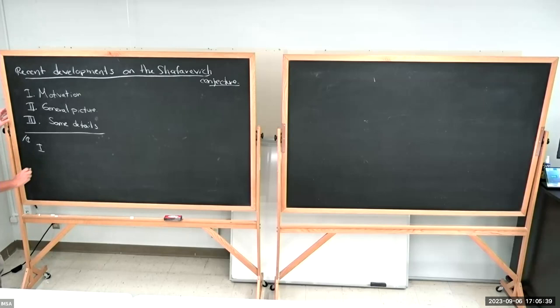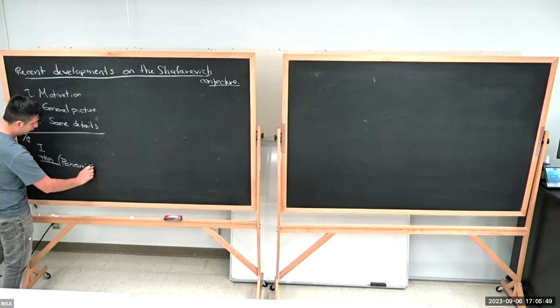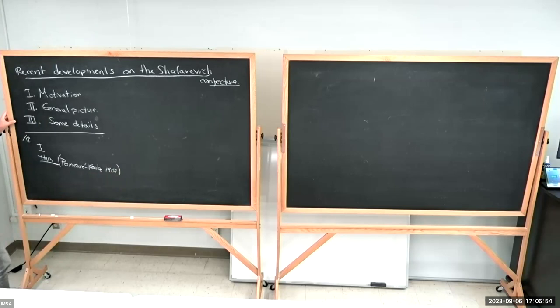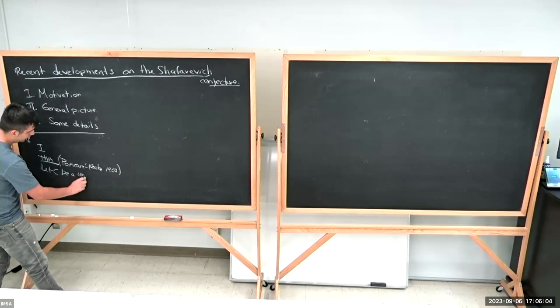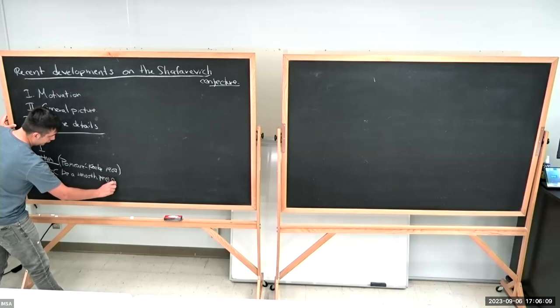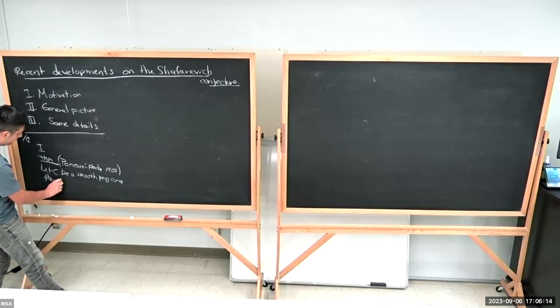Let me recall the uniformization theorem. This is a theorem due to Poincaré, around 1907, and it says the following. You take a smooth projective curve, then its universal cover...